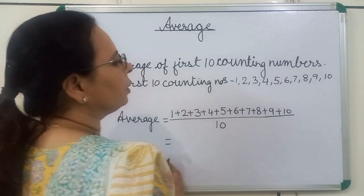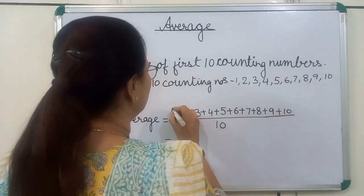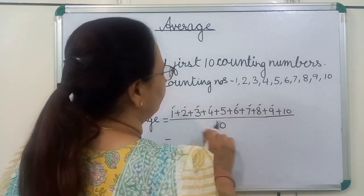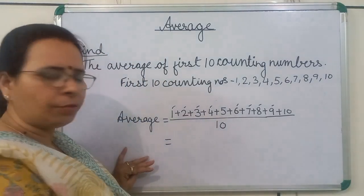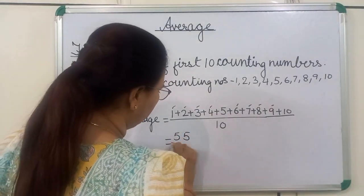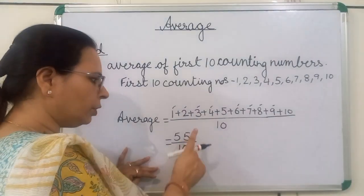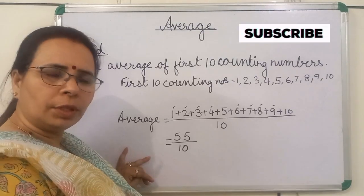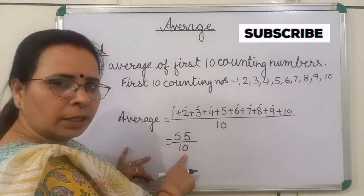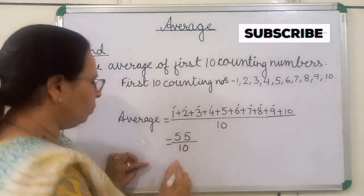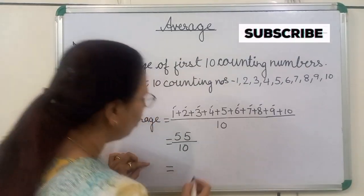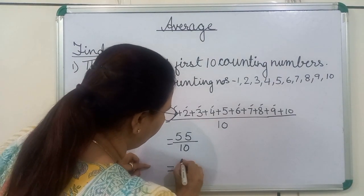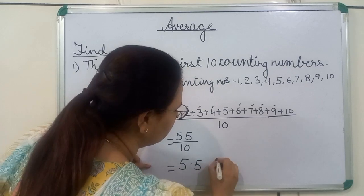Now, we will add these numbers. The sum is 55, so we get 55 upon 10. Since 55 is not exactly divisible by 10, we will get the answer in decimal. We put the decimal point one digit from the left, giving us 5.5. This is the answer.